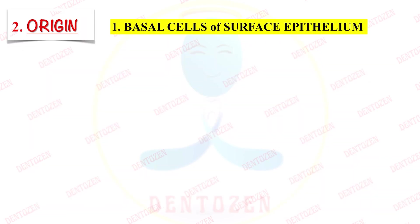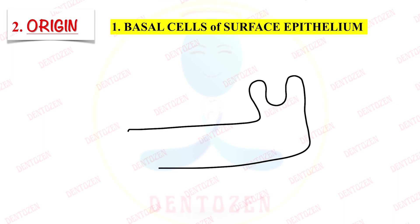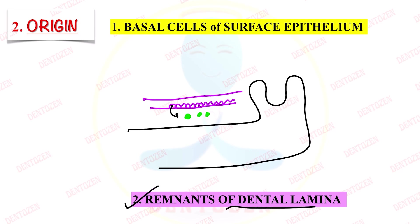Now talking about the origin: we already know it is in the periphery, that is in the gingiva. First, from the basal cell layer of the gingival epithelium, cells can proliferate and give rise to ameloblastoma in the connective tissue of the gingiva. Second is from the remnants of dental lamina. In dental histology we learn that dental lamina remnants may be present in the connective tissue of the gingiva, and these remnants can proliferate and give rise to peripheral ameloblastoma.